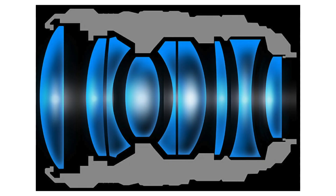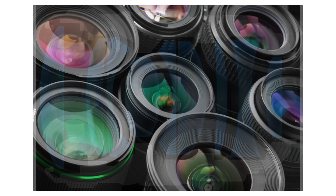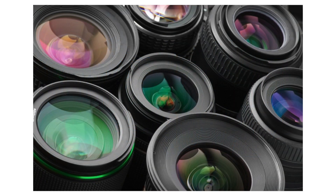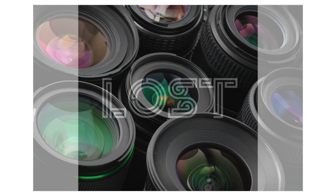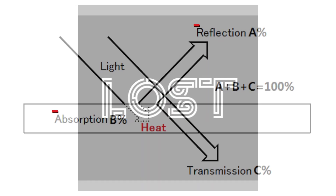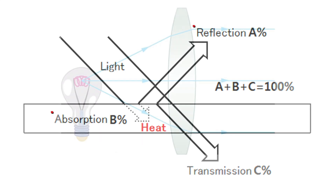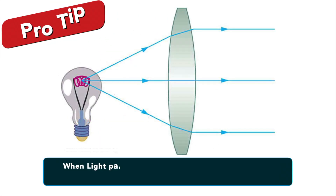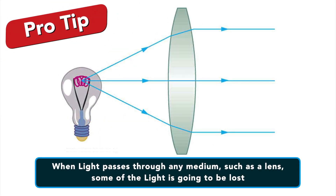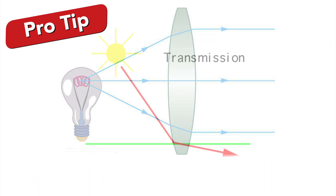Photographic lenses are made of several elements of very pure glass, each element being carefully coated to limit reflection. However, a portion of the light is lost in the optical system due to residual reflection and absorption. When light passes through any medium, such as a lens, some of the light is going to be lost.